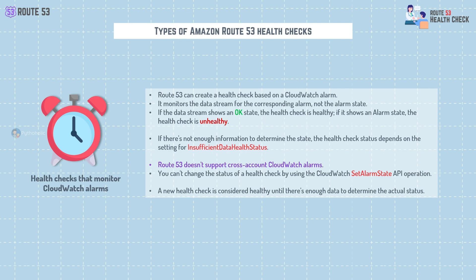If there is insufficient information to determine the state — for example, if the data stream is incomplete — the health check status will depend on a setting called 'insufficient data health status.' One important thing to keep in mind: AWS Route 53 doesn't support cross-account CloudWatch alarms, so you can only use CloudWatch alarms that are in the same account as your Route 53 health check. When you first create a health check, it's considered healthy until there's enough data to determine the actual status, so it might take a little while to show accurate information.